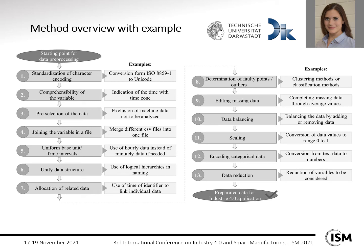Step twelve is encoding categorical data — for example, converting text data to numbers, such as the name of a city being assigned a number. And the last step, step thirteen, is data reduction — for example, a reduction of variables to be considered. After doing all these 13 steps, we have the prepared data for the Industry 4.0 application.